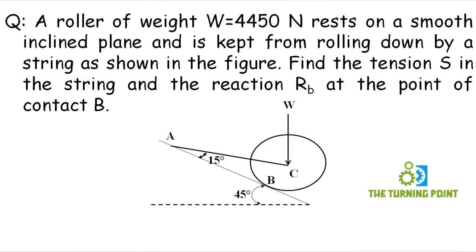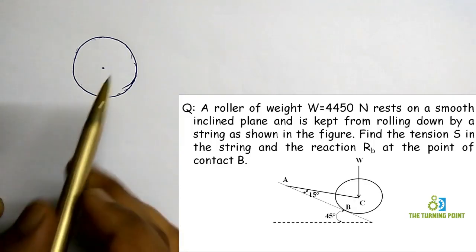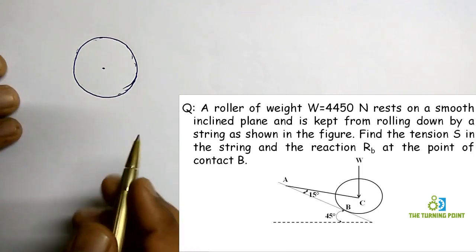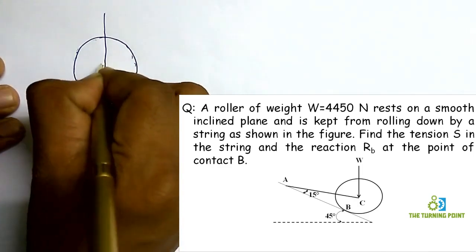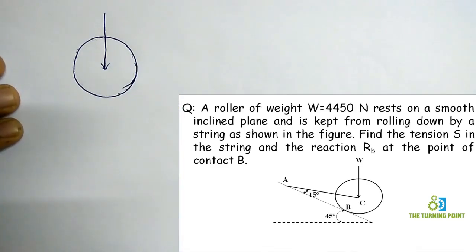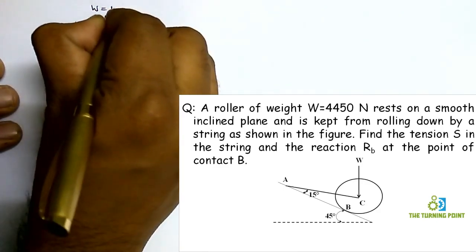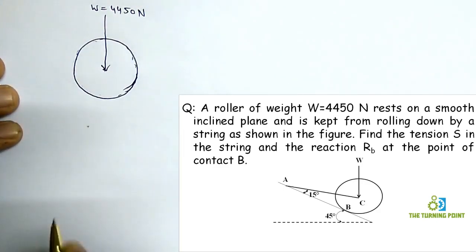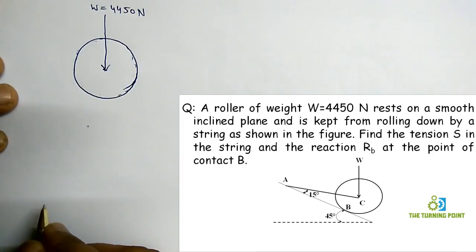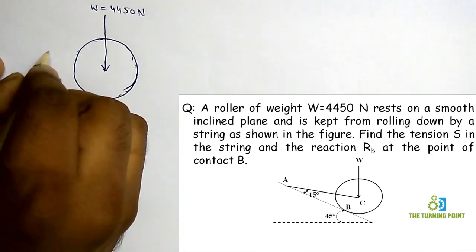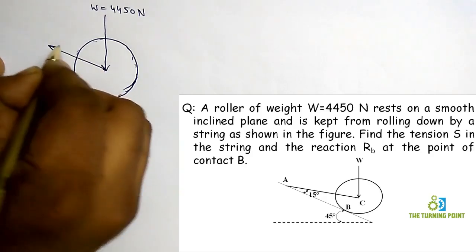To draw the free body diagram for the roller, you have to remove all surface contacts. I have removed all the surface contacts and drawn the roller separately. First, I need to represent the weight — weight always acts vertically downwards through the center of gravity. So W is equal to 4450 Newtons, which is the weight of the roller.